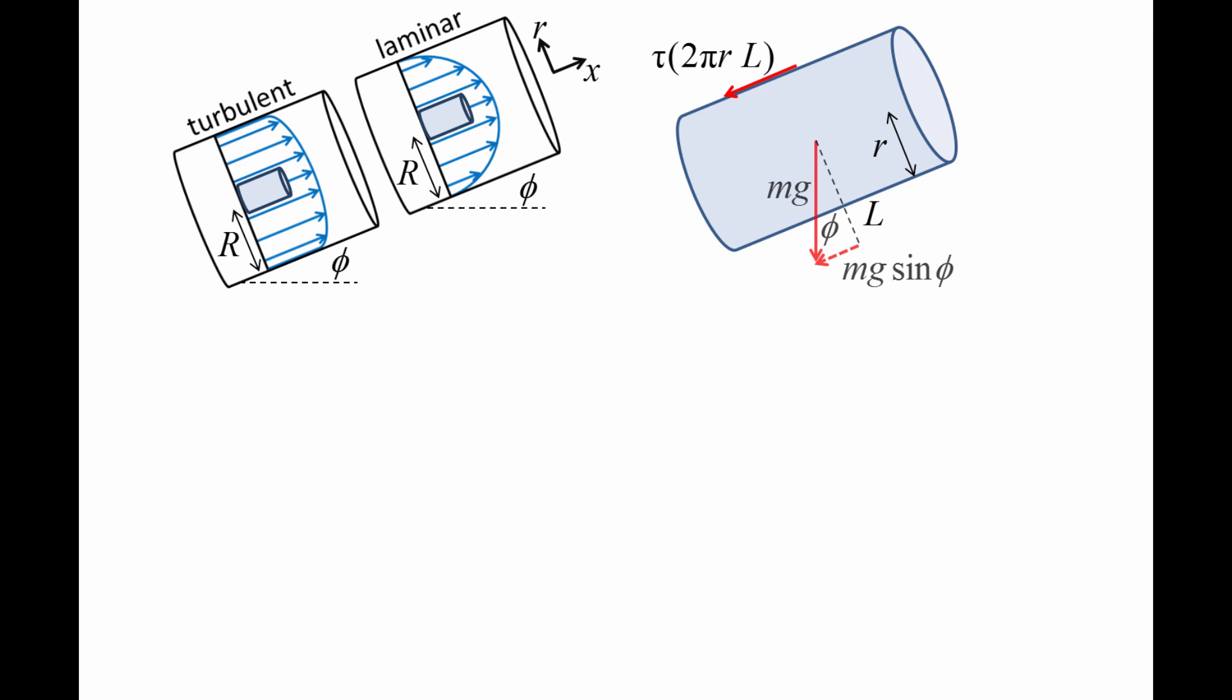Next, the weight mg acts at the center of the cylinder and points downward. The component in the axial direction is mg times sine phi. Finally, a pressure force acts at the two ends of the cylinder. On the upstream side, the pressure force is pressure p times the area pi r squared. On the downstream side, the pressure is changed by a small amount, delta p, and the resulting force is p minus delta p times area pi r squared.